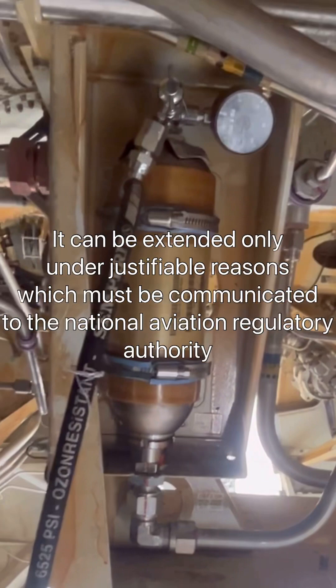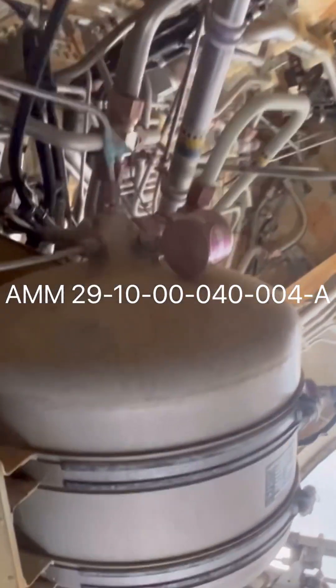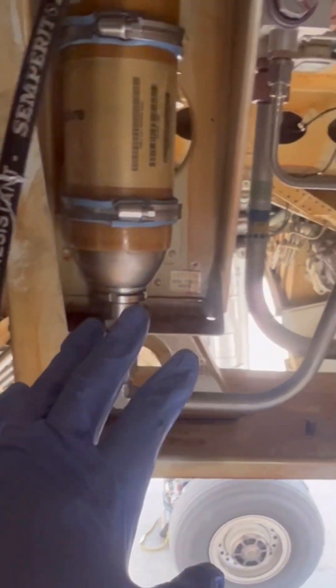The maintenance task is AMM 29-10-00-040-004-Alpha, which is the deactivation of the green system power accumulator. To save time, the job setup has been done, all precautions are followed, and the system is depressurized. Now let's proceed.